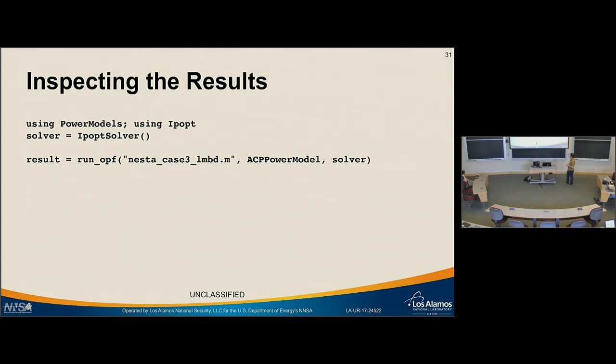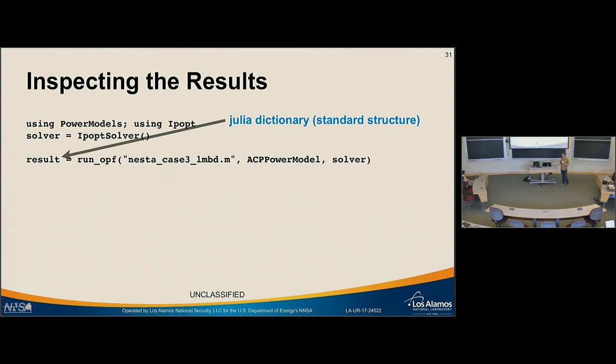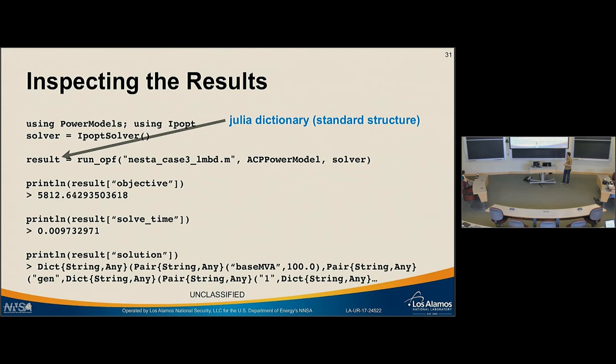When inspecting results, runOPF returns a Julia dictionary that is standardized across all different forms of the model. Whether you're running DC or AC power flow, you get back the same set of values in the same structure—some values might be NaN if they can't be represented in that form. You can query the objective value, solve time, and the solution is encoded in the right units that power engineers expect. It's a very thin wrapper on top of the Jump solution, but makes it more friendly for power engineers.